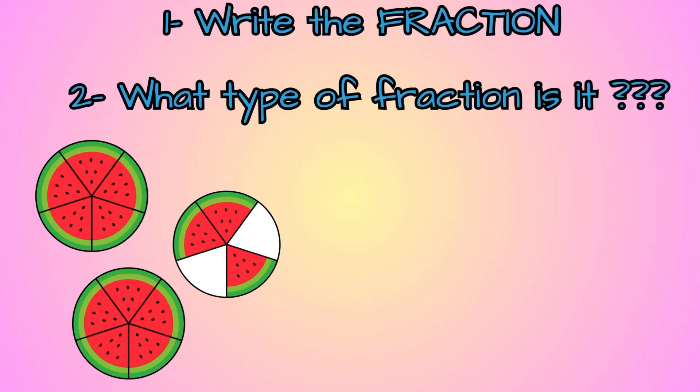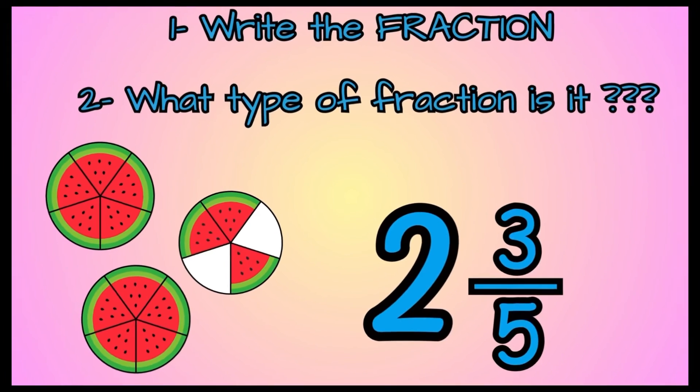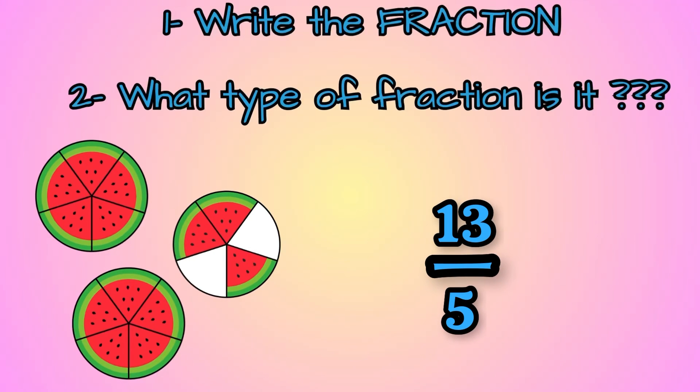My wholes are divided into five equal parts and I have 13 pieces of watermelon. So, my fraction is 13 fifths or 13 over five. As you can see, guys, mixed fractions and improper fractions are related. They are similar. But, that would be for another lesson.